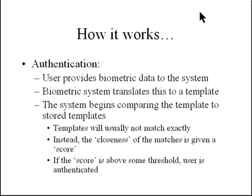Getting back to authentication: first the user provides the biometric data — fingerprint, iris, or whatever — to the system. The biometric system reads the raw data and translates it to a simplified template. Then the system begins comparing this template to all stored templates, generating a score for each. If the score is above a certain threshold, the user is authenticated and allowed access.